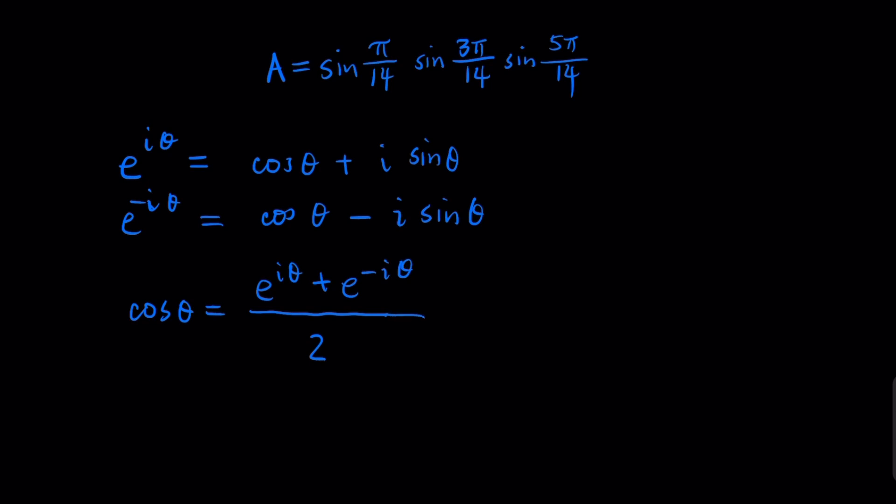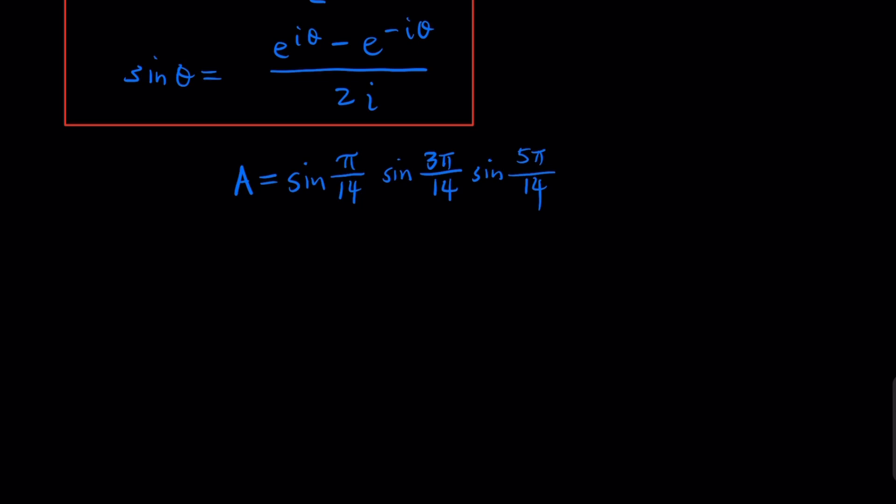Similarly, if you subtract these two equations, this would cancel and you're going to have 2i here. So what you do is you have sine θ is going to equal (e^(iθ) - e^(-iθ))/(2i). Now another thing is I would like to further rewrite this part, the conjugate part.